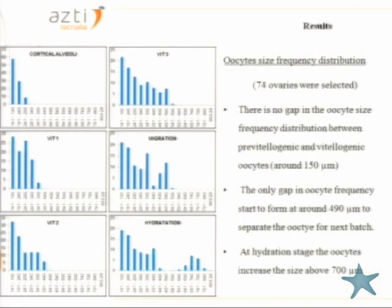From those females, we selected 74 ovaries for analysis of oocyte size frequency distribution by different ovarian maturation classes. We observed a continuous development of oocytes from cortical alveoli through early and late vitellogenesis, without any gap between pre-vitellogenic and early vitellogenic oocytes, which is evidence of continuous development during the spawning season. At initial migration, around 490 micrometers, a hiatus separates the largest modal group of advanced oocytes from the advanced vitellogenic oocytes. In the hydration stage, oocytes can grow above 700 micrometers, and the hiatus and batches become clearly evident.